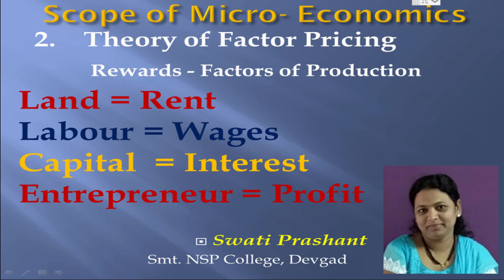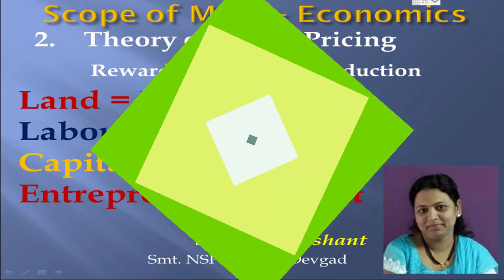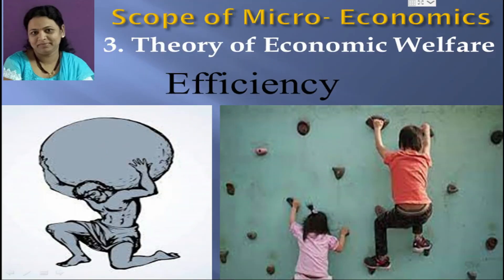Microeconomics helps to determine the rewards for every factor of production — in the form of rent, wages, interest, and profit. The third and most important scope is the theory of economic welfare. Theory of economic welfare is closely associated with efficiency. It is connected with maximum utilization and maximum satisfaction of the people. Economic efficiency is related to three kinds of efficiencies: efficiency in production, efficiency in consumption, and overall economic efficiency.